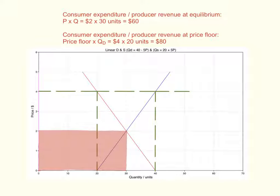You may also be required to calculate the consumer expenditure or producer revenue at equilibrium. This is price times quantity—the equilibrium price times the equilibrium quantity. $2 × 30 units = $60 of revenue or consumer expenditure. This is the rectangle shaded in red.